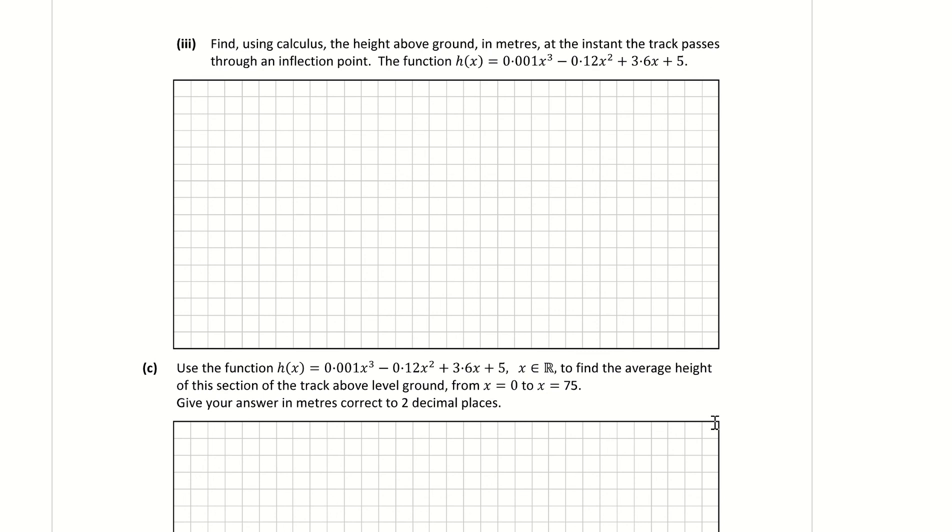It's asking us to find, using calculus, the height above ground in meters at the instant the track passes through an inflection point. And they've just given us the function there again. Now, point of inflection is always found by finding the second derivative of the function. So that's how you find the point of inflection. And you let that equal to 0. Now, we have the second derivative from part 2. And we found it to be 0.006x minus 0.24. So we have that. And to find the point of inflection, you let that equal to 0.